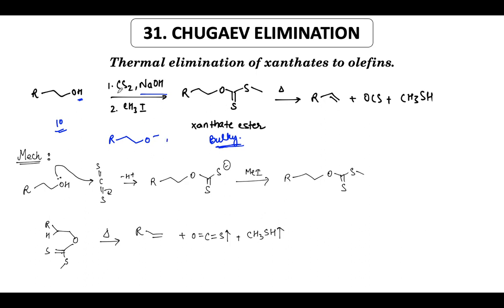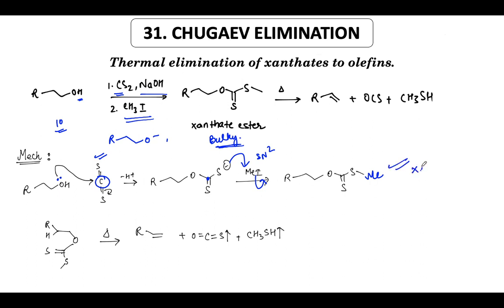The alkoxide ion then attacks on carbon disulfide. The alcohol attacks on the carbon of CS₂, one bond opens up on the sulfur, giving you the oxygen-carbon double bond with S and S⁻ — this is called the xanthate anion. In the second step, the xanthate anion accepts an electrophile — methyl iodide — doing a simple SN2 backside attack, and the sulfur gets methylated to give you the proper xanthate ester.